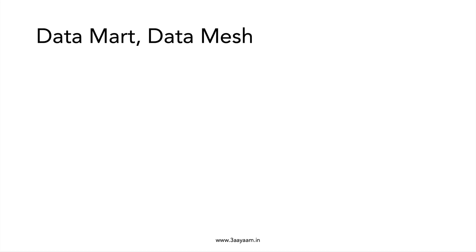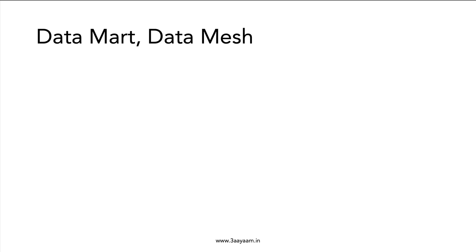Let's talk about Data Mart and Data Mesh. So far, I have talked about Data Pipeline. What is a Data Pipeline? You get data from various applications and then you store them into OLTP databases, which are also called Operational Data Stores. From there, we use a process called ETL to load data to target systems, which can be data warehousing or OLAP databases. From the OLAP databases, it goes to downstream applications like reporting, analytics, machine learning, etc. This entire flow is basically a data engineering pipeline.